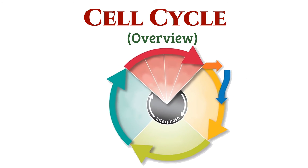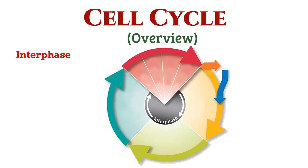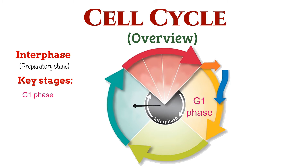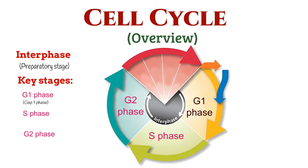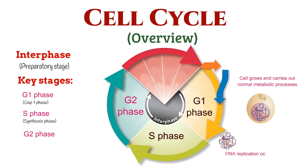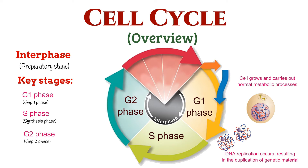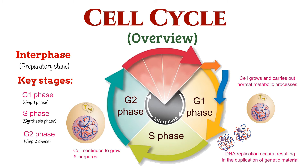Interphase is the preparatory stage divided into three key stages: G1 phase, S phase, and G2 phase. During G1, the cell grows and carries out normal metabolic processes. In the S phase, DNA replication occurs, resulting in the duplication of genetic material. The G2 phase follows, where the cell continues to grow and prepares for division. This phase is the same for both types of cell cycles.